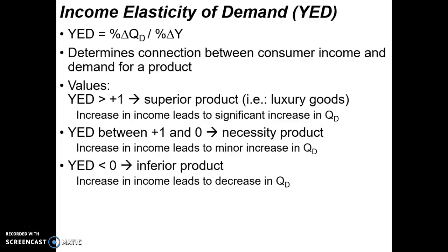A YED between 0 and 1 — positive but less than 1 — indicates necessities. When income goes up, there's only a minor increase in quantity demanded. Finally, when YED is less than 0, those are inferior products — unique products where an increase in income actually leads to less demand. When income goes up, the numerator is negative because people move away from those products. Examples include store brand goods, or over the long term, bicycles, as people can afford more cars.